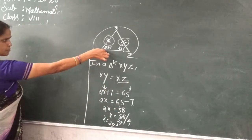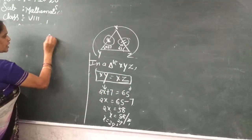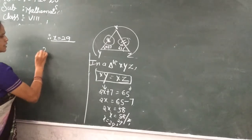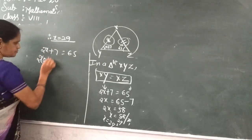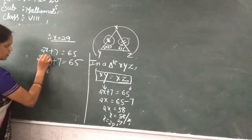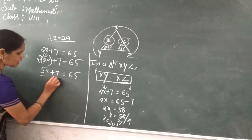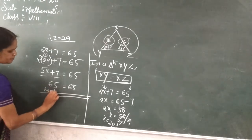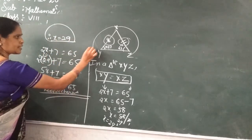Already in our problem, the condition is XY is equal to XZ. Therefore X is equal to 29. Whether we got our answer correct or not, let us recheck. So 2X plus 7 is equal to 65. Substituting: 2 times 29 plus 7 equals 65. That is 58 plus 7, which is 65. So 65 is equal to 65. Yes, hence checked.